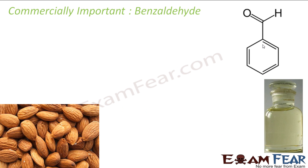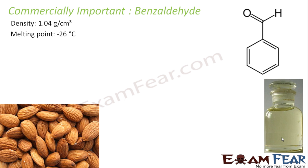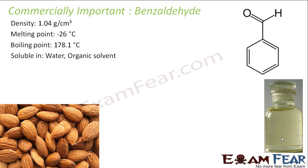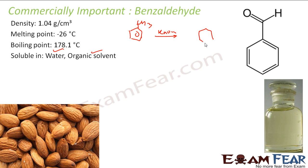The next is benzaldehyde. This is how it looks — it is slightly yellowish in color and has the flavor and odor of almonds. It has a density of 1 gram per centimeter cube, a melting point of minus 26 degrees Celsius, and a relatively high boiling point. It is soluble in both water and organic solvents. To prepare it, you take toluene and oxidize it with KMnO4 at high temperature to get benzaldehyde.